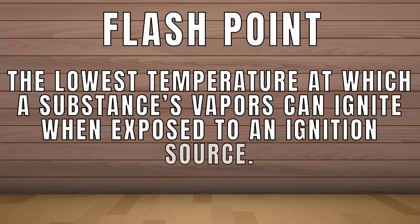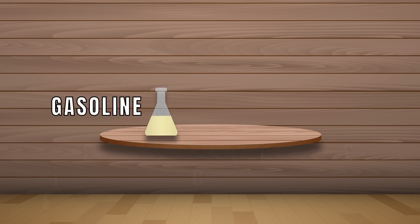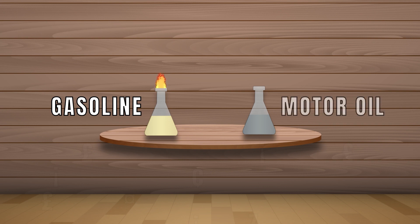Finally, let's talk about flash points. The flash point is the lowest temperature at which a substance's vapors can ignite when exposed to an ignition source. For example, gasoline has a low flash point, which means it can ignite easily, making it dangerous to handle near open flames or sparks. On the other hand, substances with high flash points like motor oil are less likely to ignite and are therefore safer to handle.